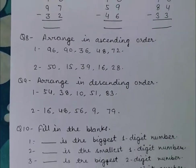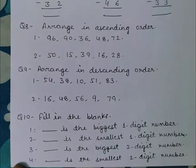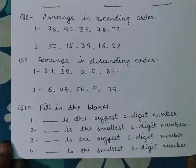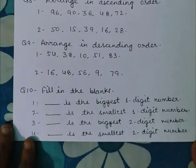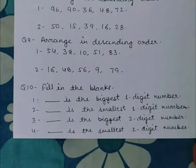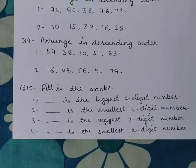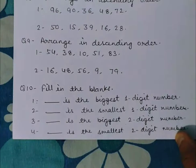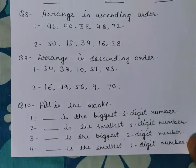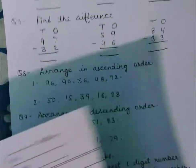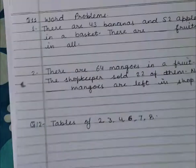Number 9: Arrange in descending order. Number 10: Fill in the blanks - blank is the biggest one-digit number, blank is the smallest one-digit number, blank is the biggest two-digit number, blank is the smallest two-digit number. And question number 11: word problems.